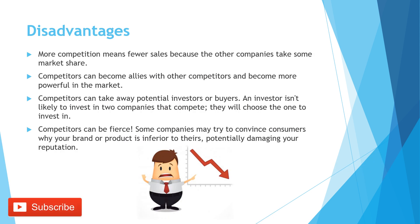The disadvantages of the competitive environment: more competition means fewer sales because other companies take some market share too. Competitors can become allies with other competitors and become more powerful. So if there are four or five competitors in a market, two or three of them might become allies to take over the market, leaving your business on its own. This is one of the worst things that could happen to a business.